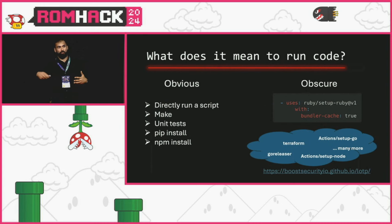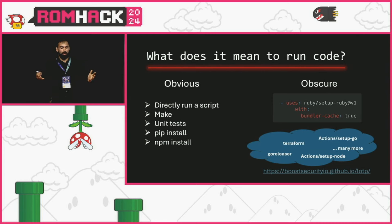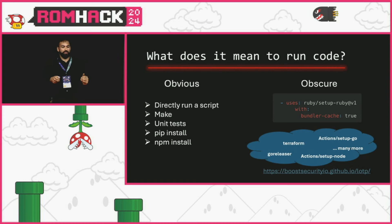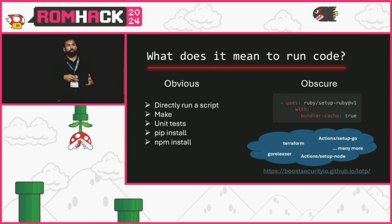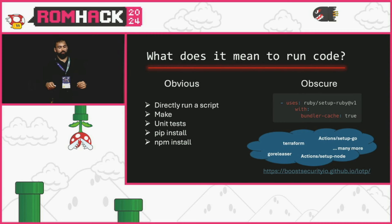For it to be a vulnerability, the workflow finally has to run the code — because checking out untrusted code without running it is harmless. Obvious ways include running a script or npm install. More obscure cases relate to how GitHub Actions reusable tools work: for example, the setup-ruby action with bundler_cache set to true will call the bundler command, which uses the Gemfile, and within the Gemfile you can add a system command to run arbitrary bash code. Boost Security has a resource called Living Off the Pipeline that covers more such techniques.